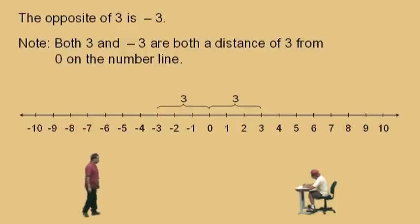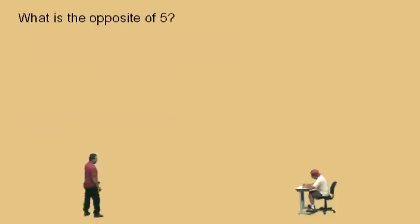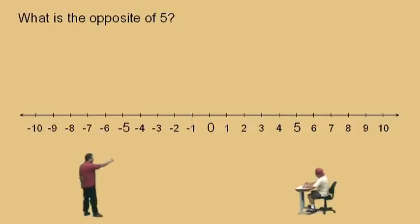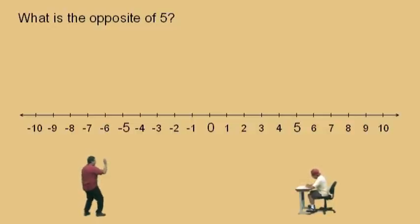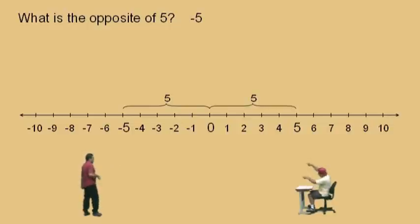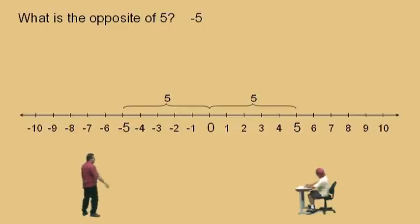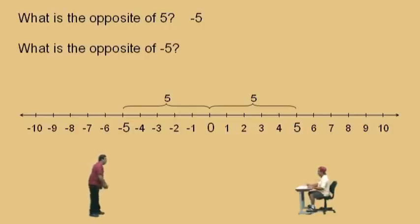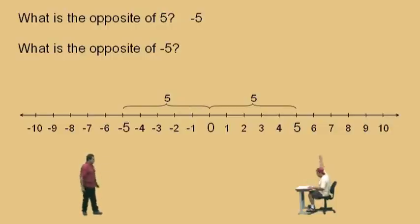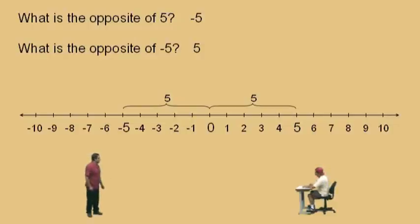What is the opposite of 5? Well, if we think of a number line, 5 is over there. What is the opposite of 5, Charlie? Negative 5. Remember, 5 is a distance of 5 from 0 on that side. On this side, negative 5 is a distance of 5 from 0. So they are opposites of each other. And if somebody asks, what is the opposite of negative 5? 5. It's very simple when they ask you this in words — opposite of 5 is negative 5, opposite of negative 5 is 5.